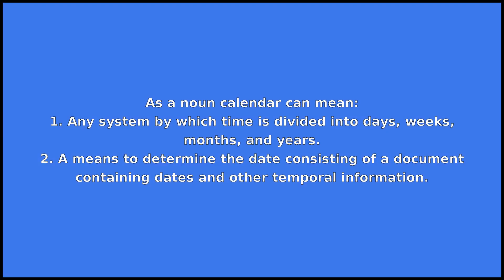As a noun, calendar can mean: 1. Any system by which time is divided into days, weeks, months, and years. 2. A means to determine the date, consisting of a document containing dates and other temporal information.